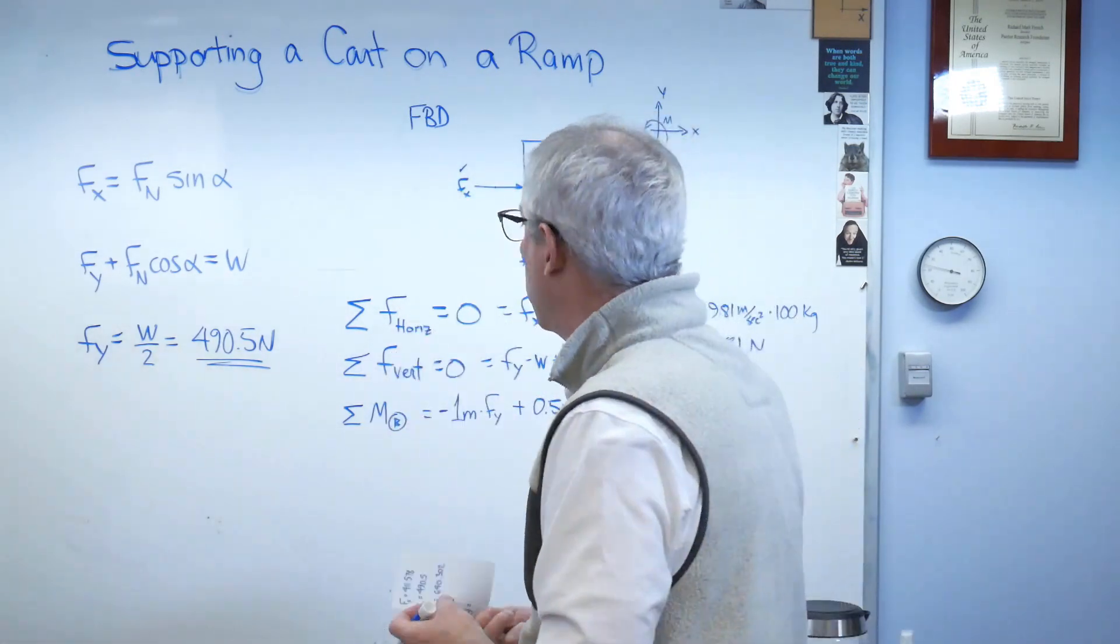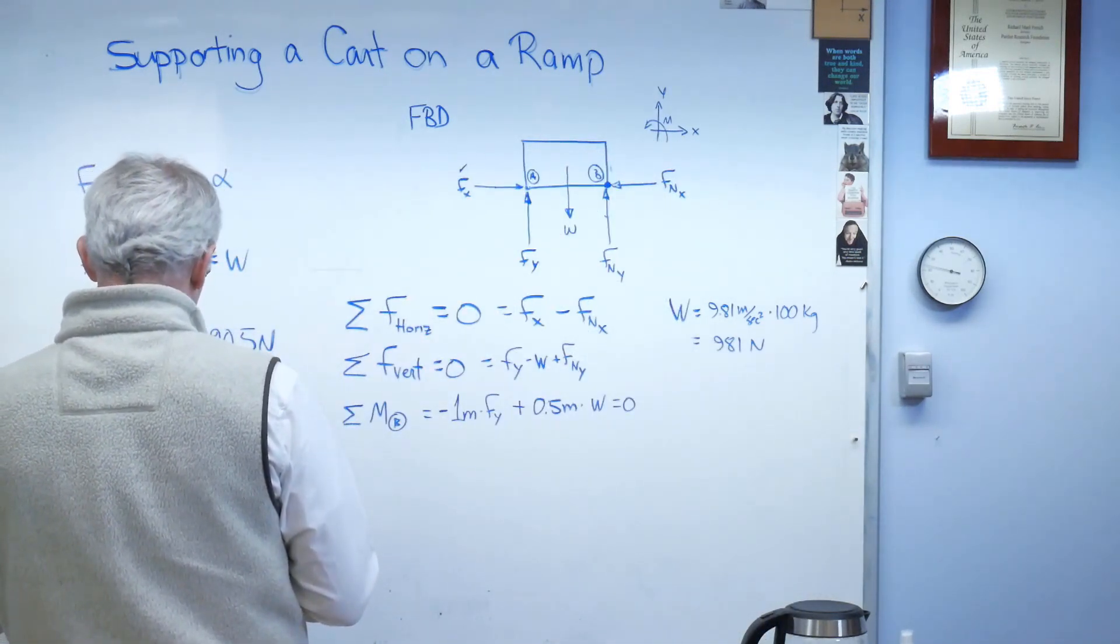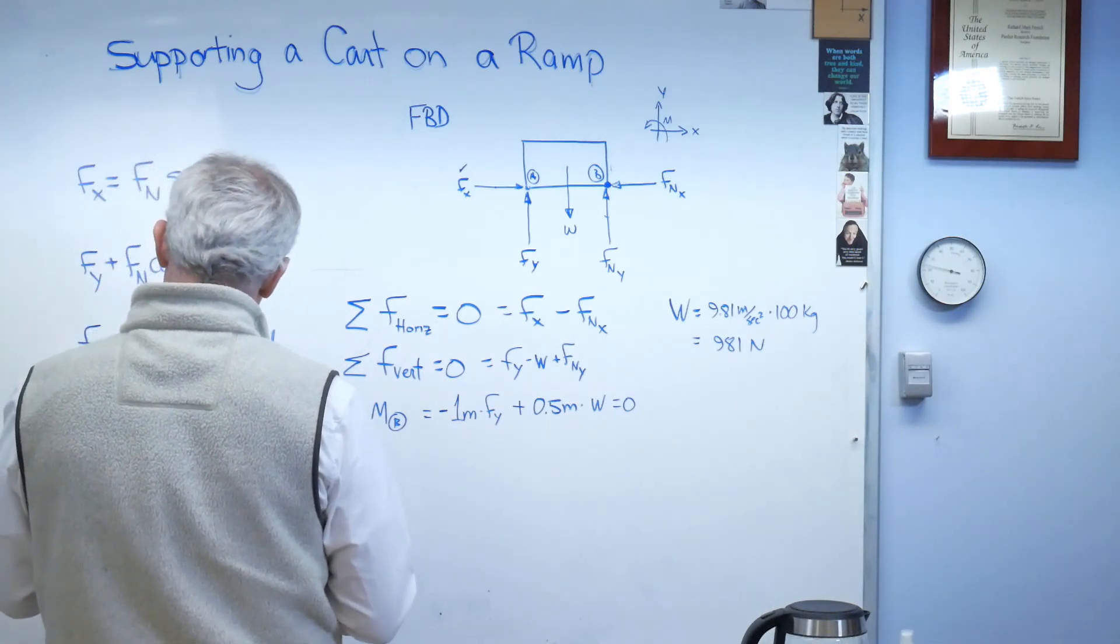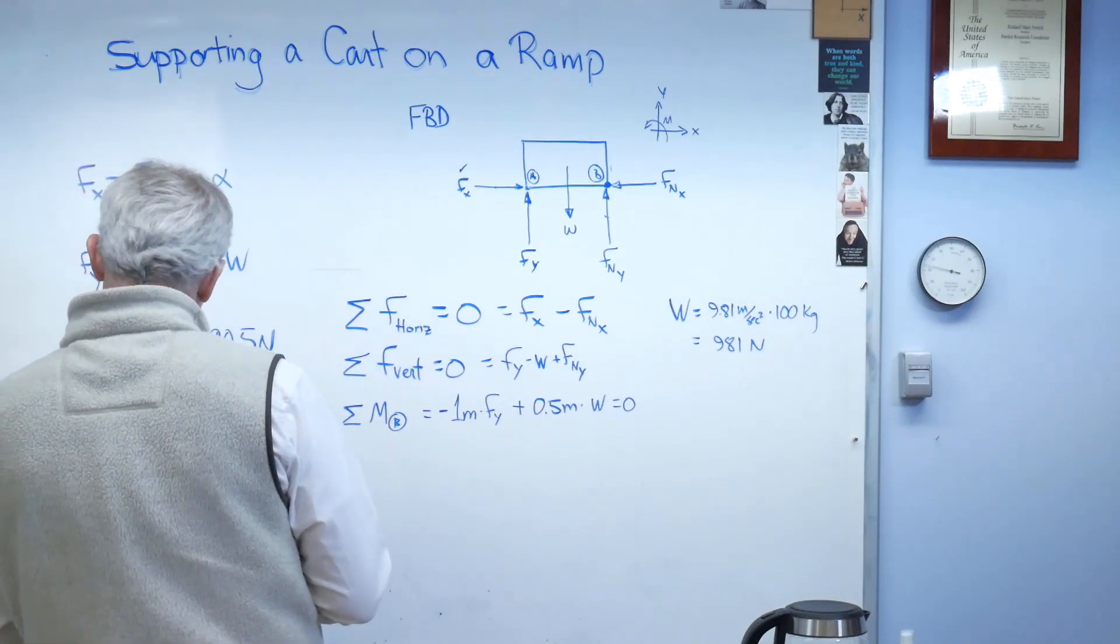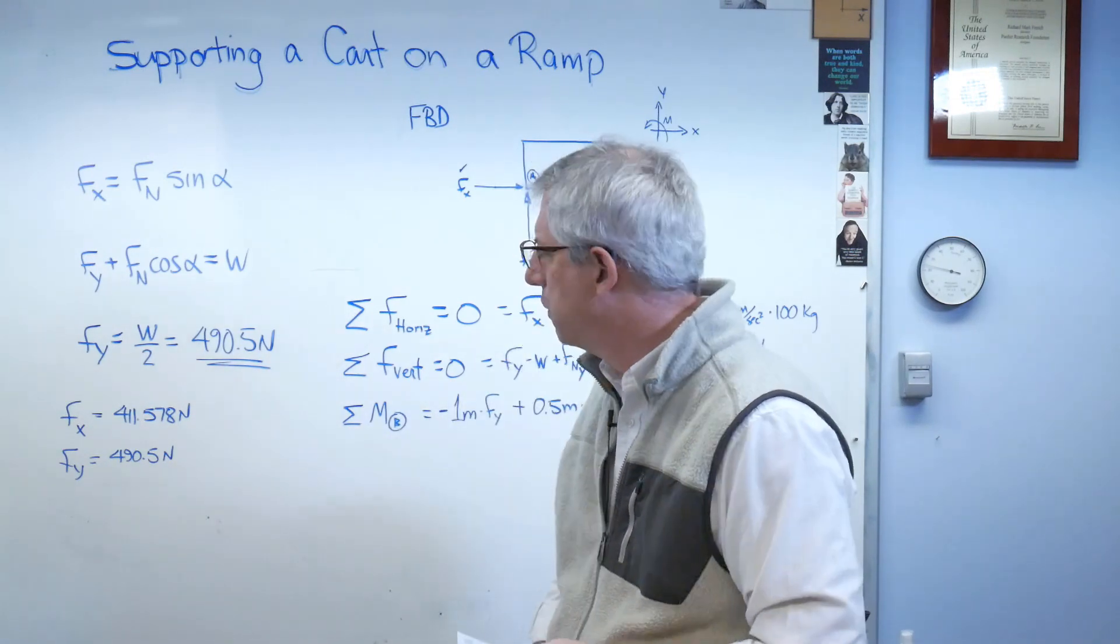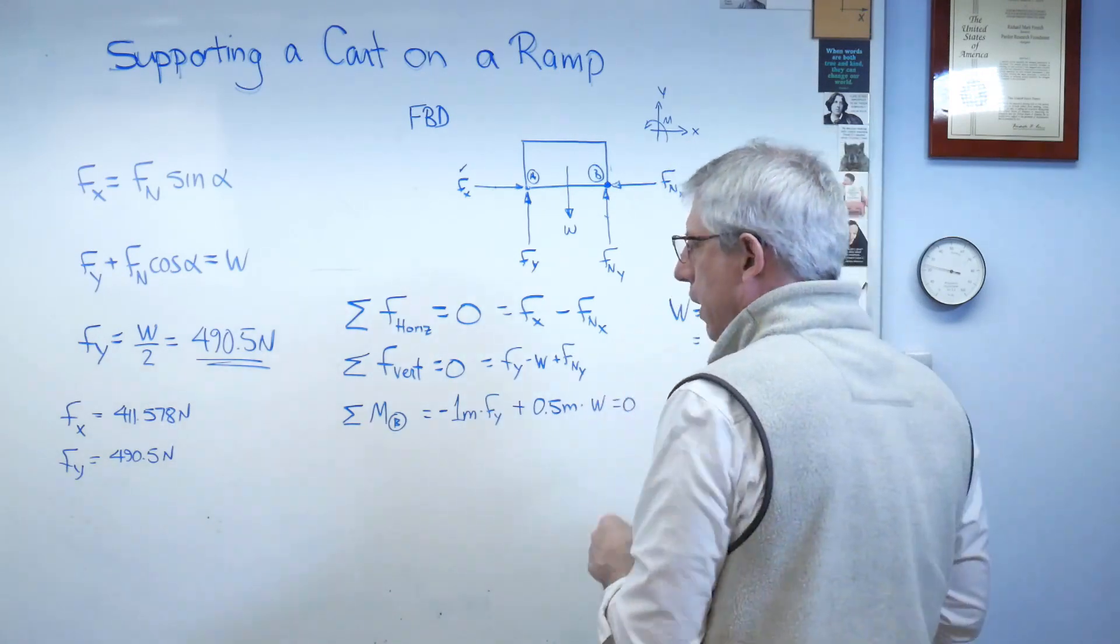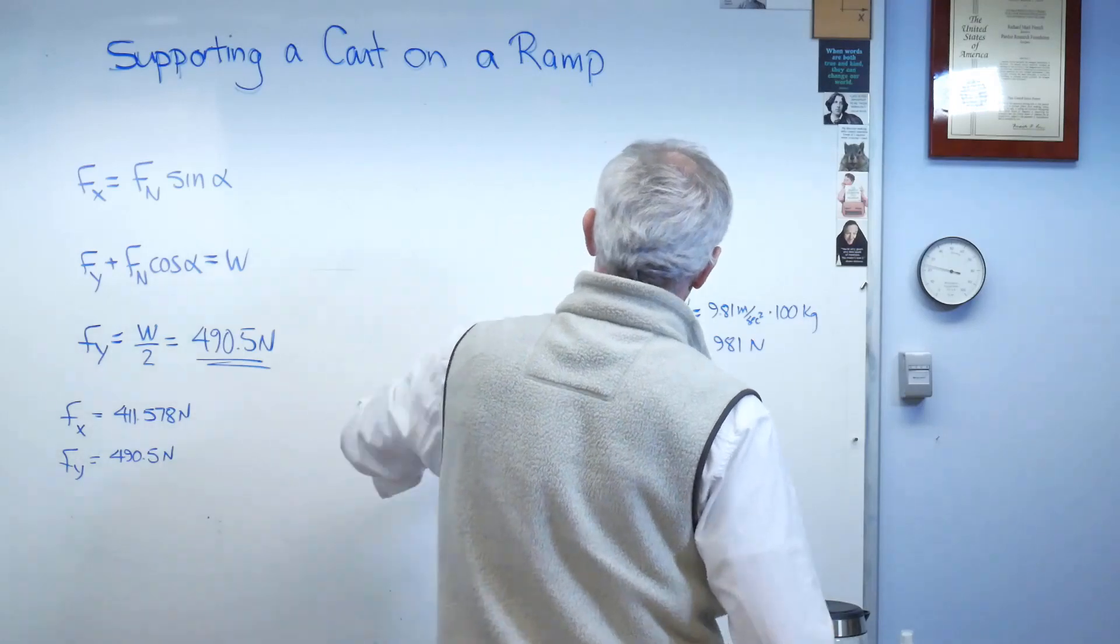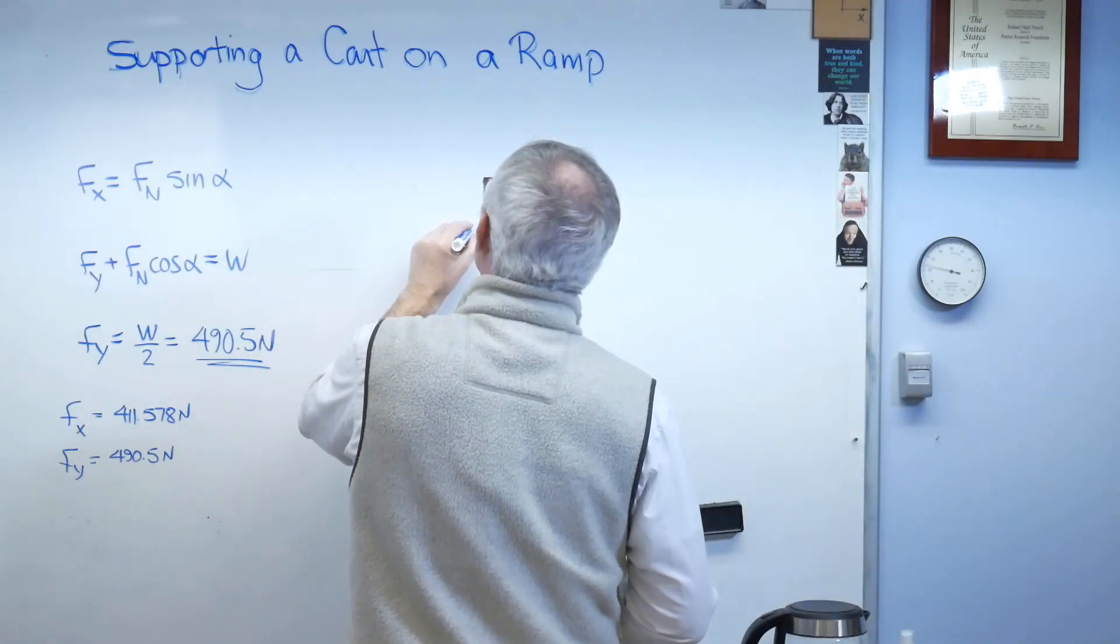Now if I solve for the rest of these, I'm going to write this down here. I got my little cheat card here. I want to make sure I write these down correctly. I get F of x is 411.578 newtons and F_y. I've seen one of those numbers before. I wonder what this means.